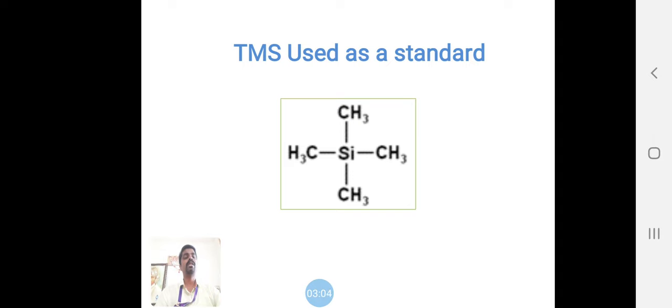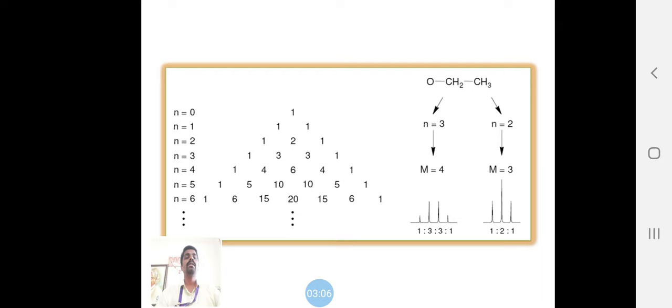This is Pascal's law. We can calculate how many NMR signals or splittings we are getting through Pascal's law. For example, CH2-CH3 protons - we follow N plus 1 rule. CH2 sees CH3, that is 3 plus 1 equals 4.